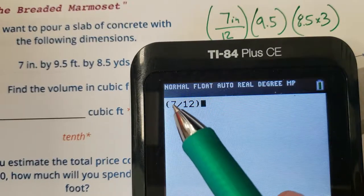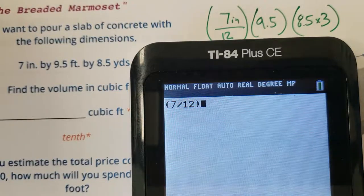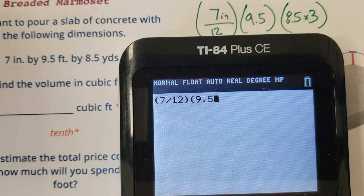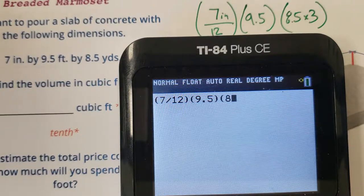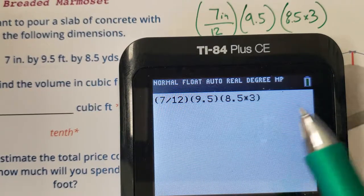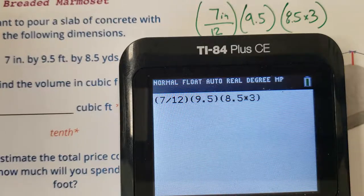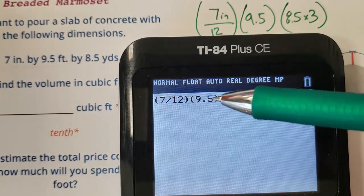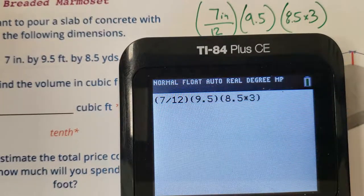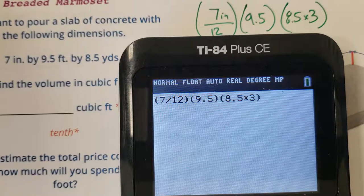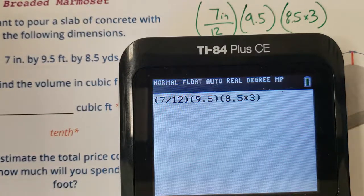7 twelfths. That is 7 inches. It's 7 of the 12 inches, so that's technically feet. Then we have 9.5. Then we have 8.5 times 3. Boom, look at that. That's the feet. That's the feet. That's the feet. To make cubic feet, you need to go foot times foot times foot. So if you just rewrite them in terms of feet without having to simplify them, you can do it all in one swing. So hit it.